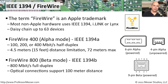FireWire 800 was an update to the standard that allowed for faster speeds. FireWire 800 goes at 800 megabits per second, and notice that it goes at full duplex — that means you have 800 megabits in one direction and 800 megabits in the other direction all at the same time. For copper connections, you still have the older standard of 4.5 meters distance limitation and 72 meters maximum.